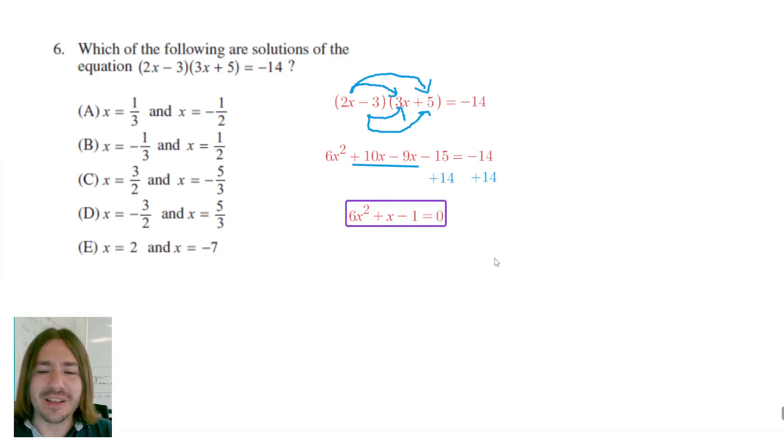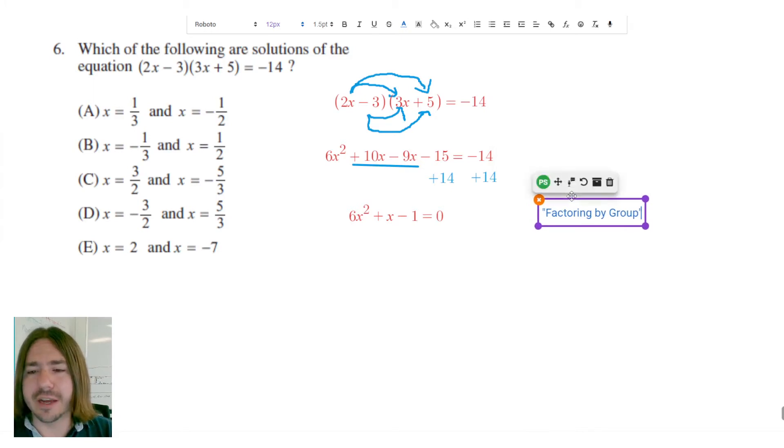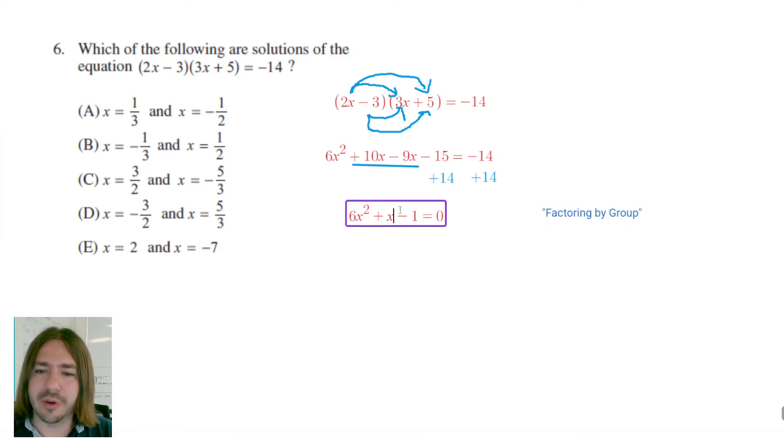So to factor this, since the leading coefficient is not 1, we're going to use a technique called factoring by grouping. And if you want more information and a more detailed breakdown on how factoring by grouping works, I would just go ahead and Google that and find a good YouTube video. I'll kind of give you the highlights here. But I'm not going to break down the technique as much as maybe an initial lecture would.